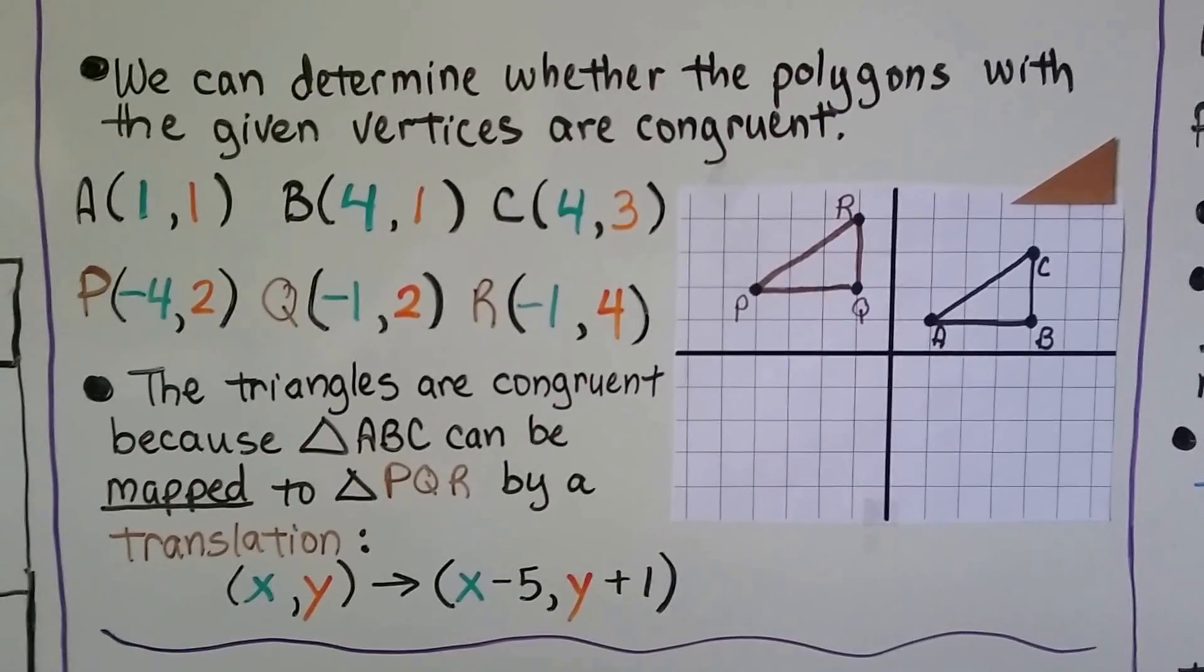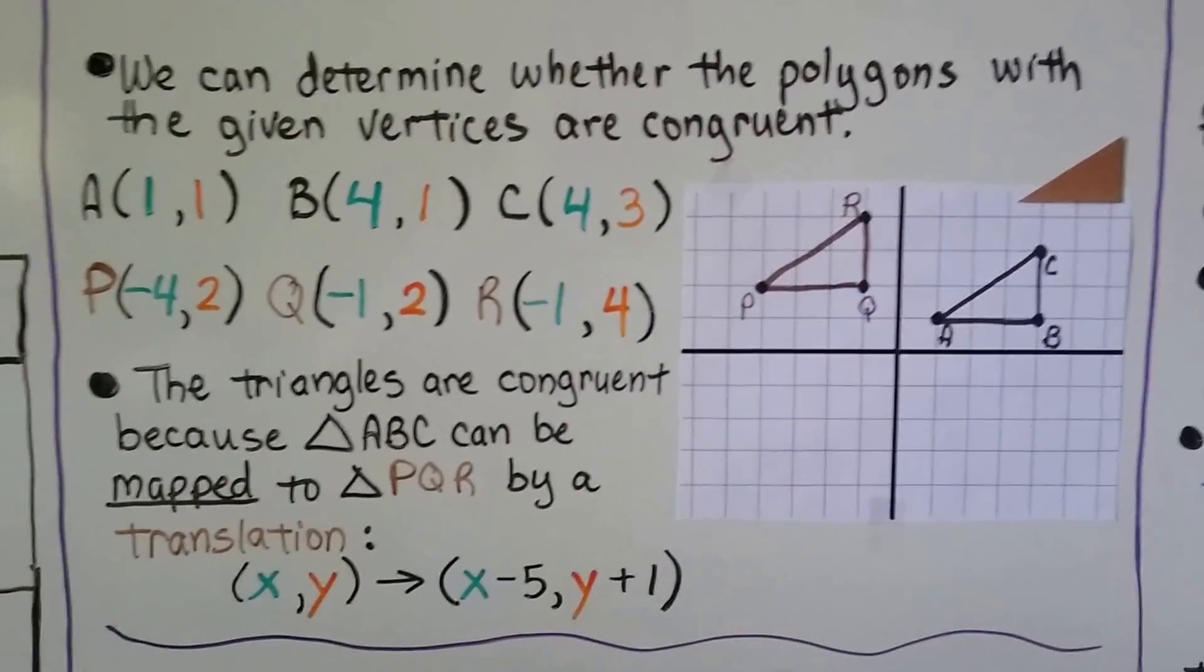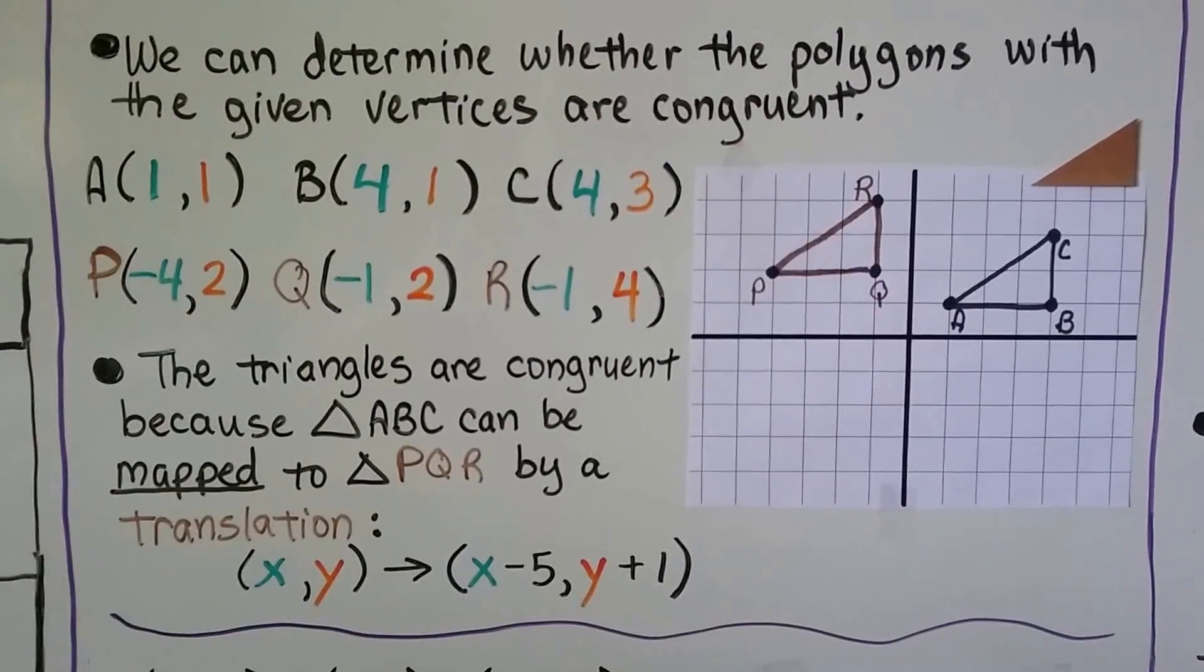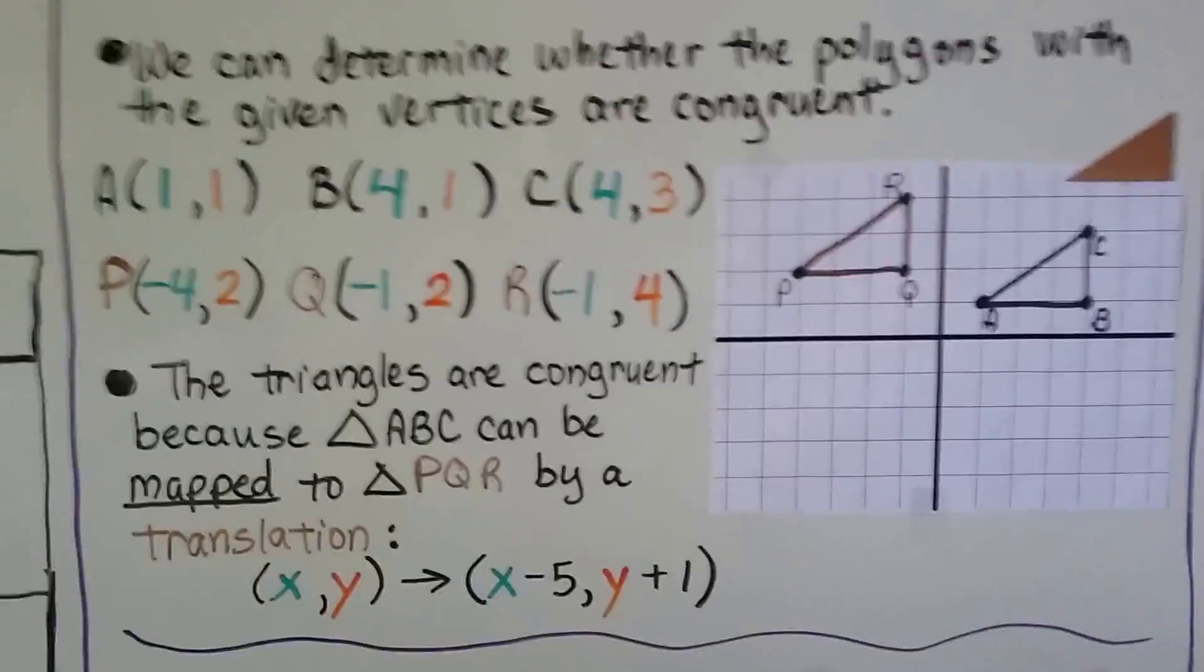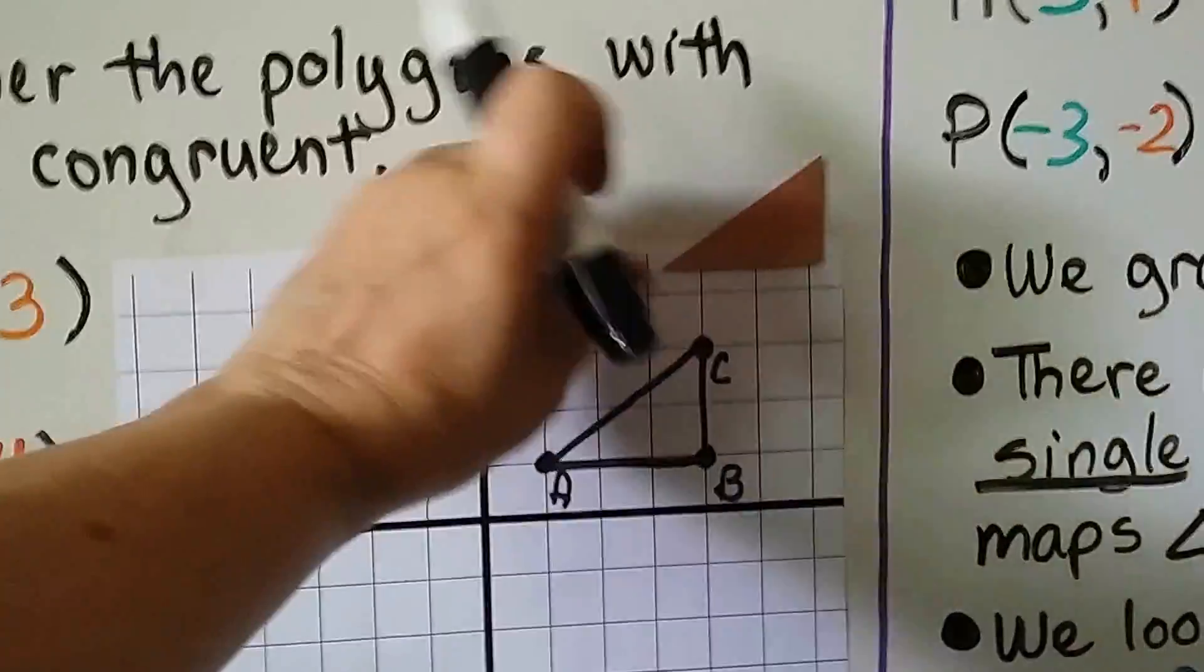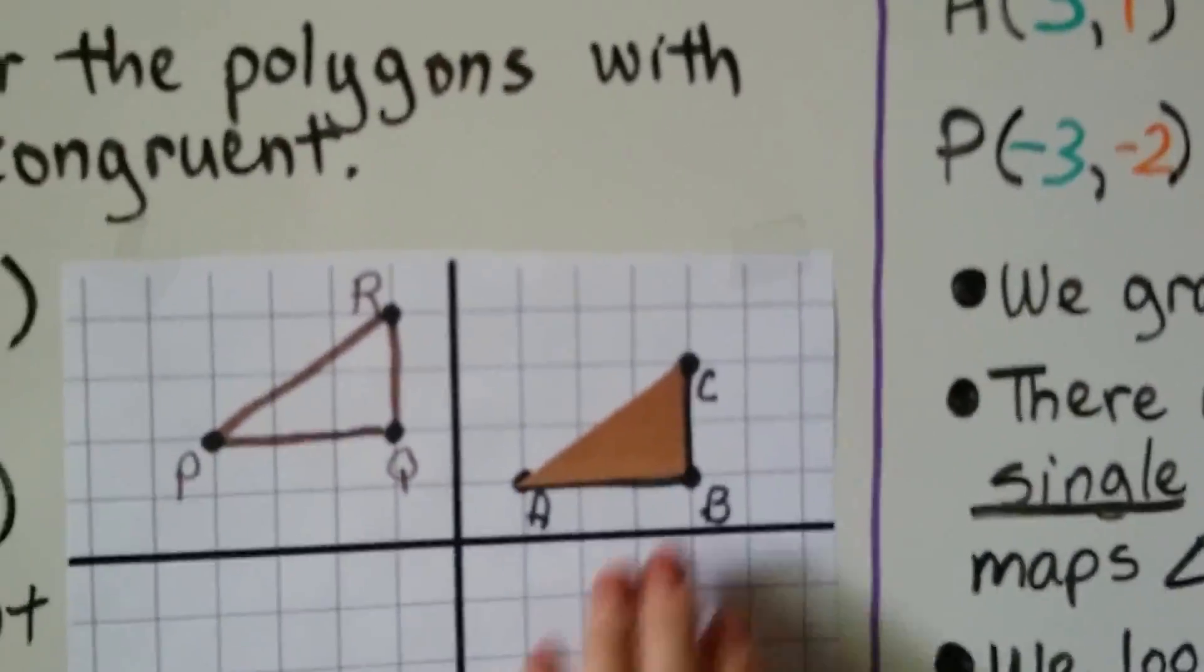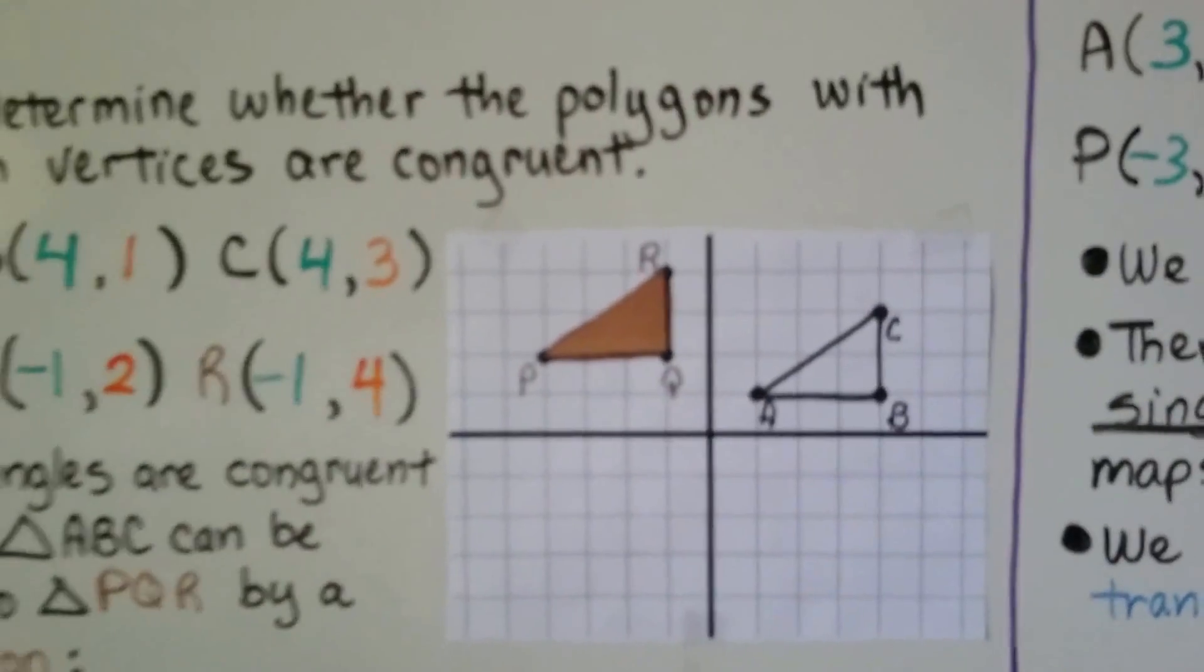The triangles are congruent because triangle ABC can be mapped to triangle PQR by a translation. XY maps to x minus 5, y plus 1. And if you look at my little triangle here, we can take this triangle and we can just slide it, translate it to here. See? That's a translation.